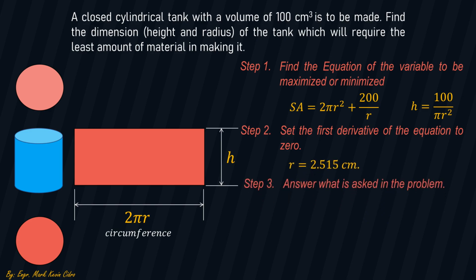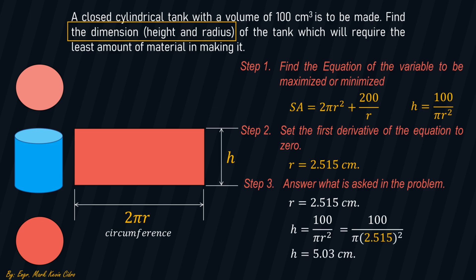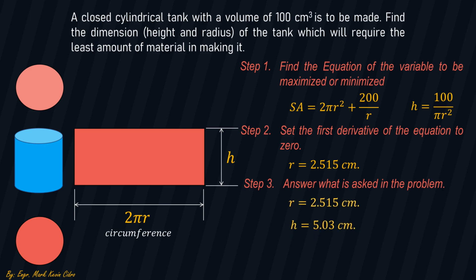Step number three: answer what is asked in the problem. The problem is asking for the dimensions. We already have r = 2.515 centimeters. Solving for H using H = 100/(πr²) and substituting the value of r, we get H = 5.03 centimeters. These are the final answers for this problem.